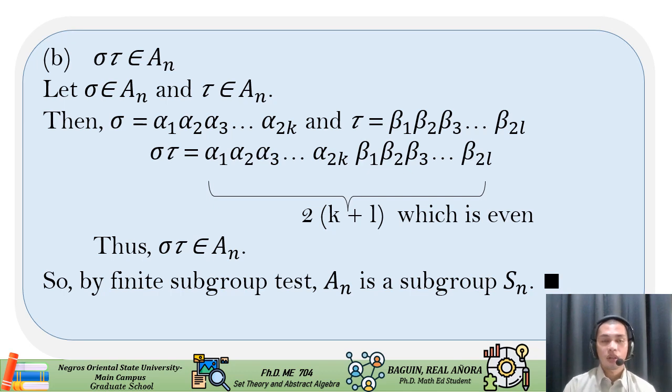So, we have sigma is equal to alpha sub 1, alpha sub 2, alpha sub 3, until alpha sub 2k, and tau is equal to beta sub 1, beta sub 2, beta sub 3, until beta sub 2l.